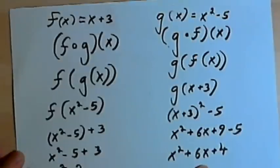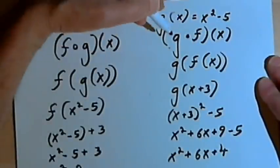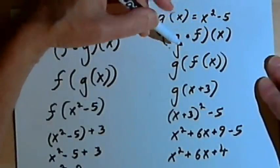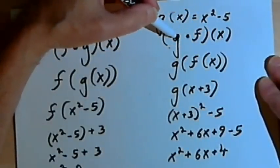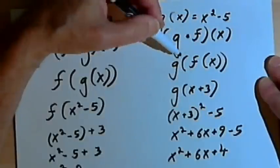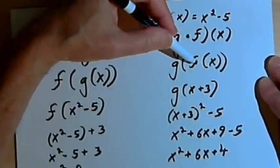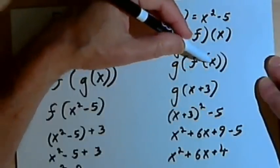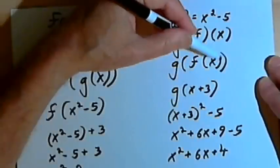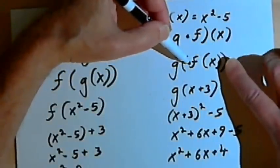So going through this one more time, what you do... I'll do the g compose f of x. What we do is we rewrite this as a function of a function, g of f of x.